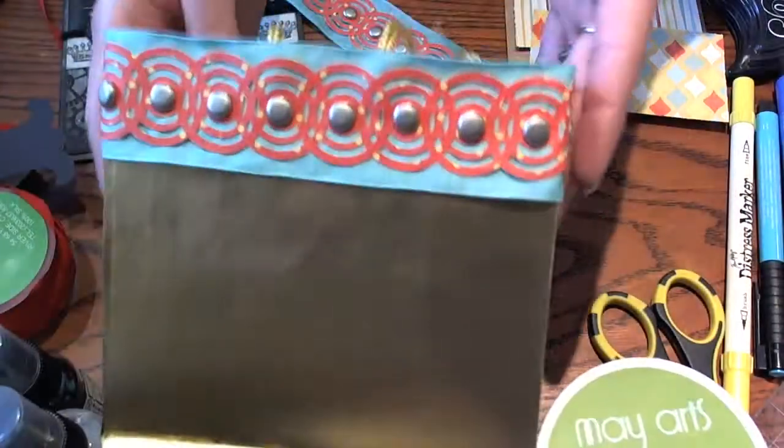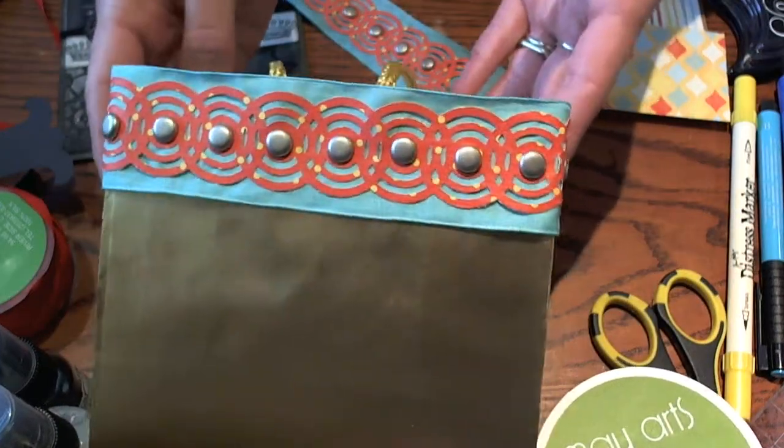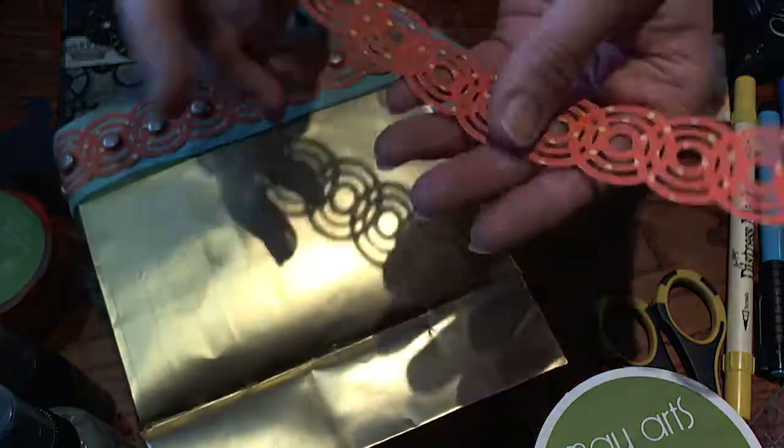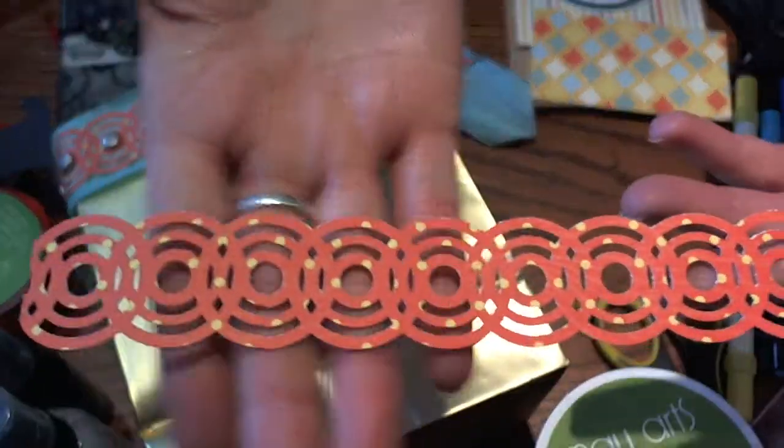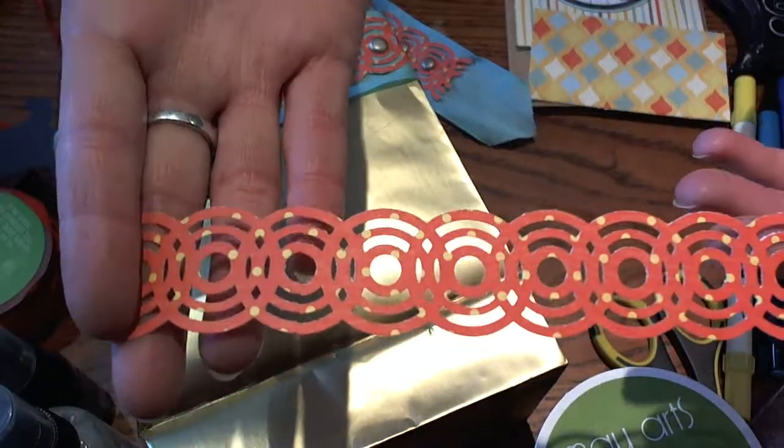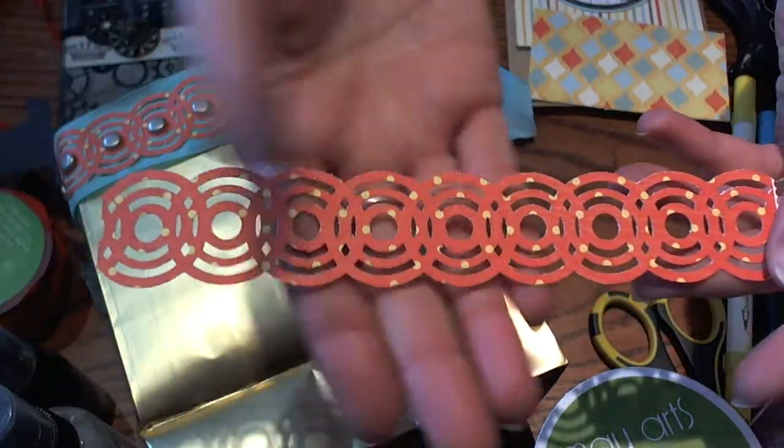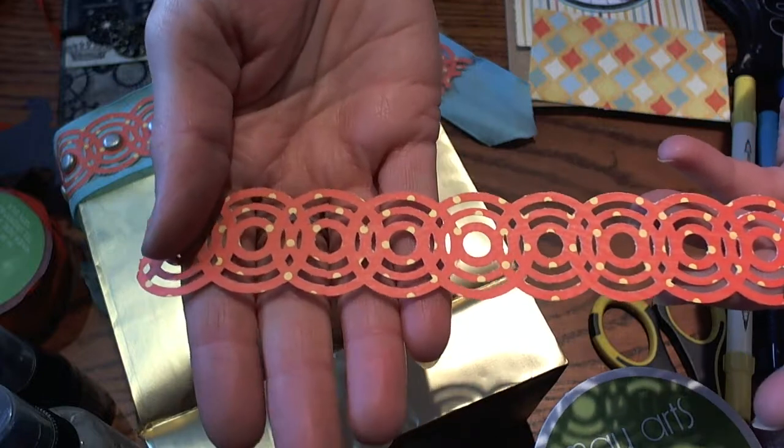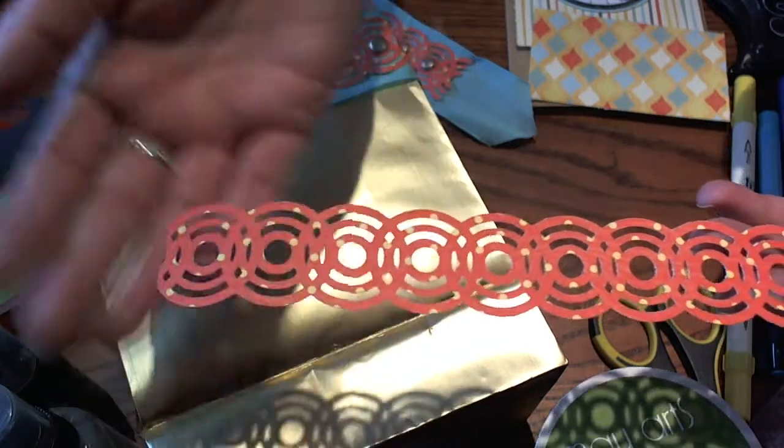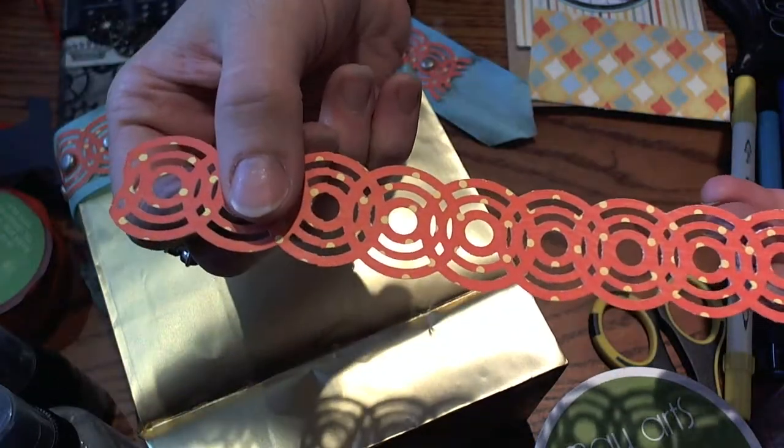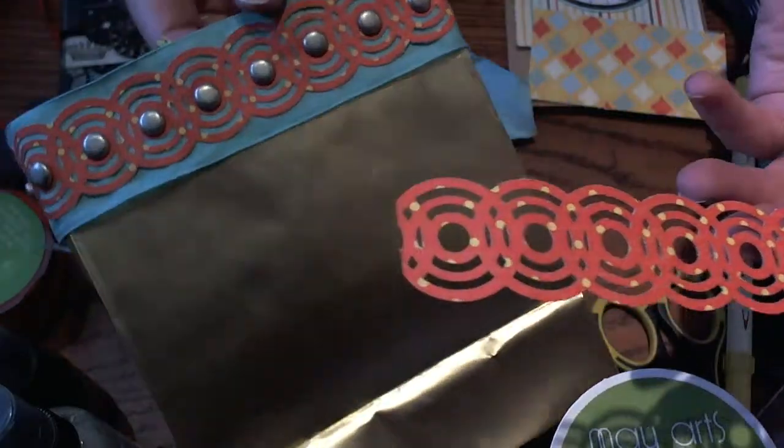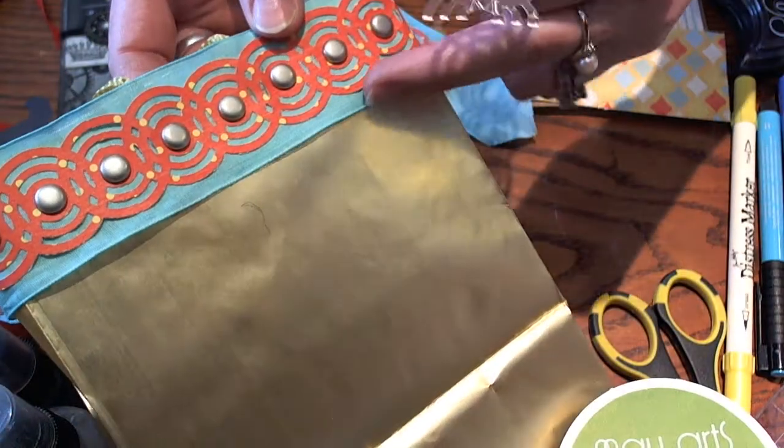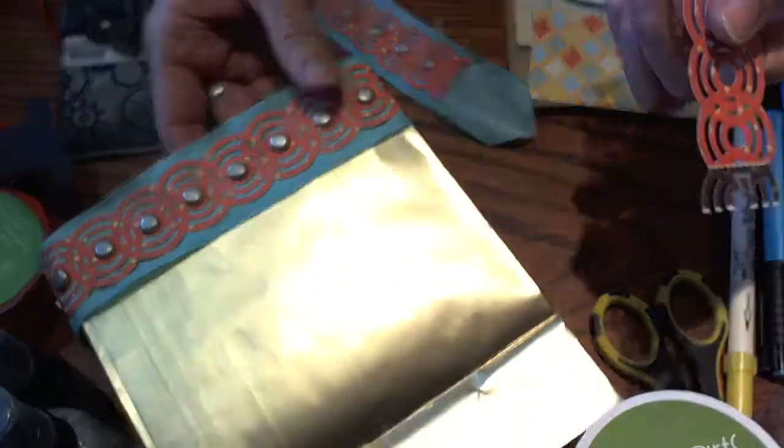First we're going to work with just a regular gift bag. I thought it would be fun to use one of my EK Success punches with these circles. I thought this was more masculine than some of my other punches that I have. I went ahead and punched it out of a My Mind's Eye paper.